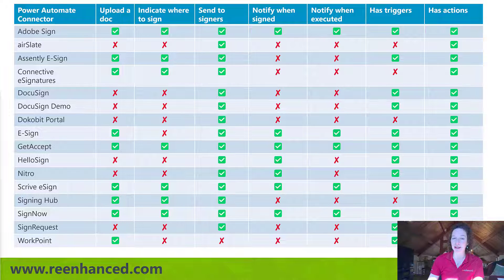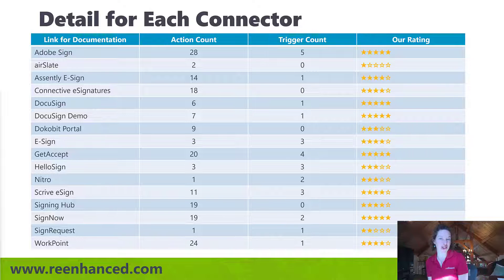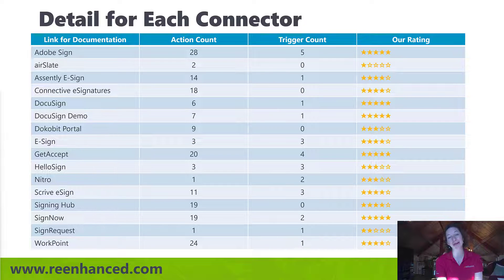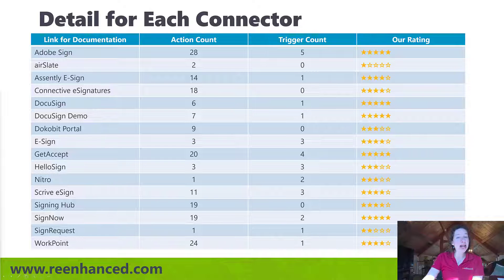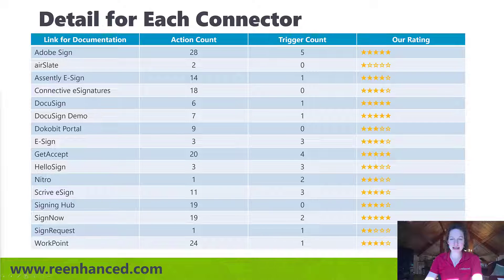Another lens you might want to look at this through for your own personal evaluation is: even if a connector checks all the boxes, how many different actions are there? Some of these aren't that great — one action, zero triggers — that's probably not a good fit. Some of them have a plethora of actions available. Our rating is completely subjective, based on the scale we just talked about, from one to five stars, and there is a little bit of impact from the number of actions. We're not going to penalize anyone for having fewer actions, but if you have fewer actions and you don't have what you'd expect for document signing, there might be a low rating there.